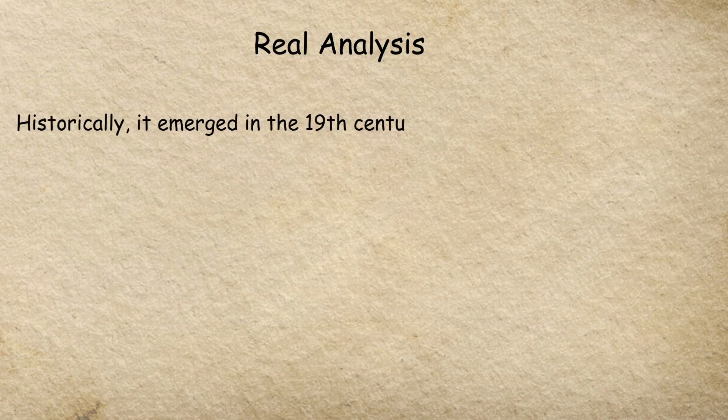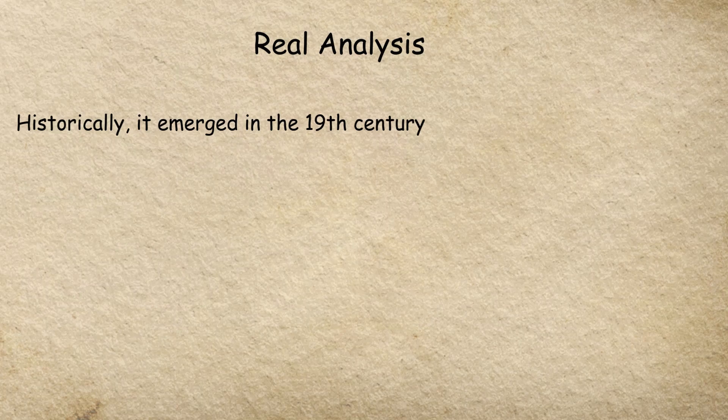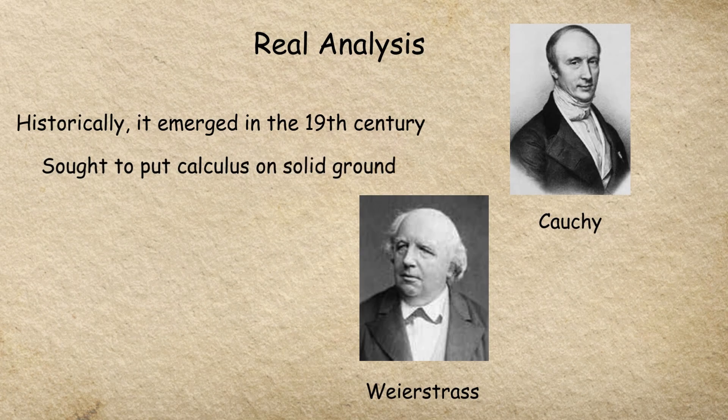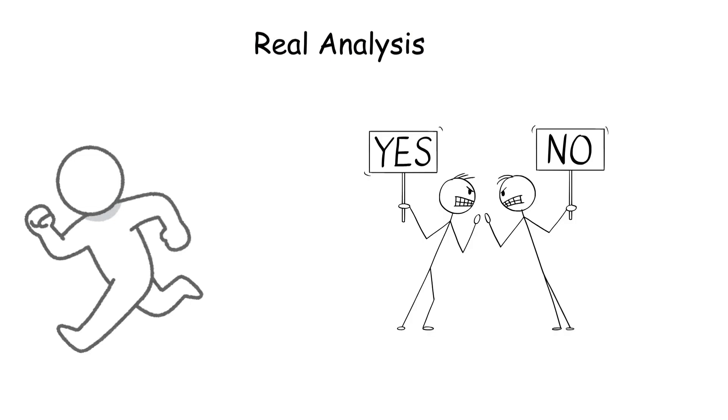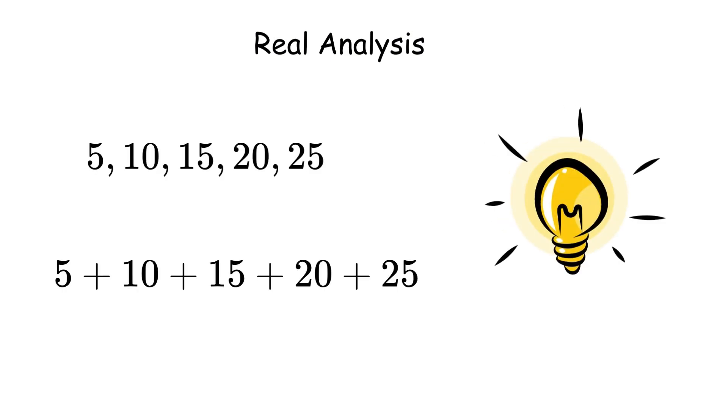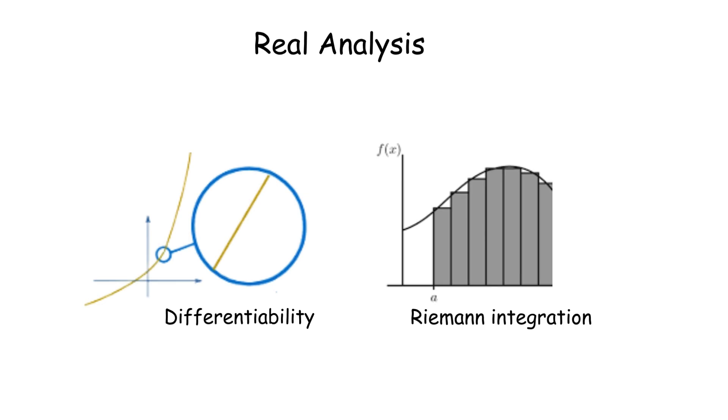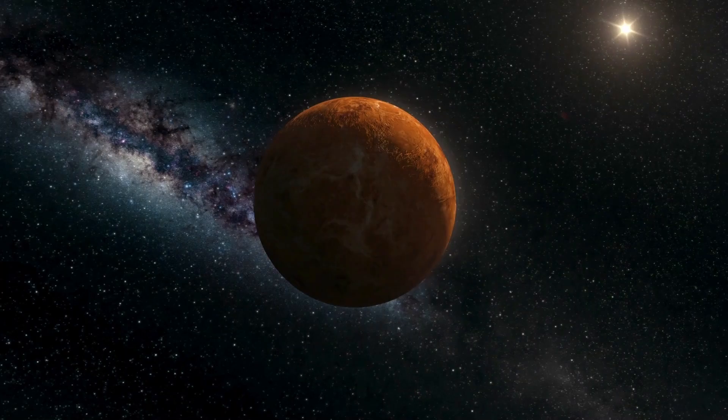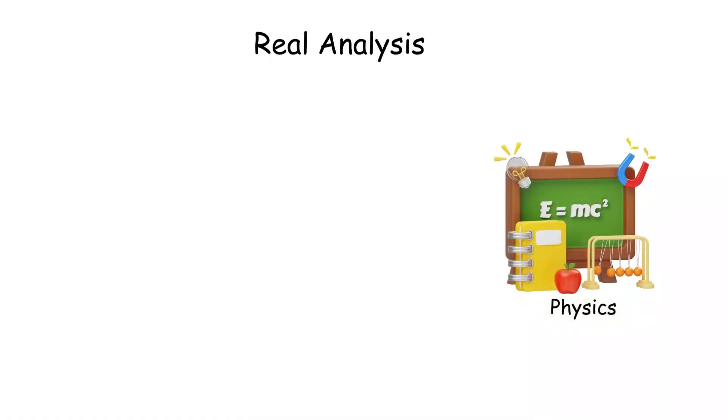Historically, it emerged in the 19th century when mathematicians like Cauchy and Weierstrass sought to put calculus on solid ground, moving away from intuitive arguments. Key ideas include sequences and series, differentiability, and Riemann integration. It's the backbone for modeling physical systems, from planetary orbits to fluid flow, and it's essential in physics and engineering.